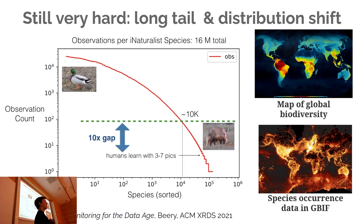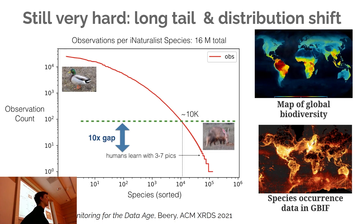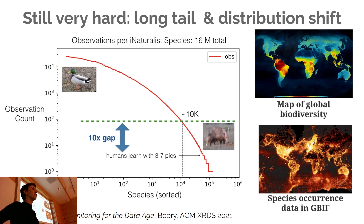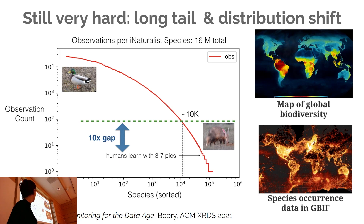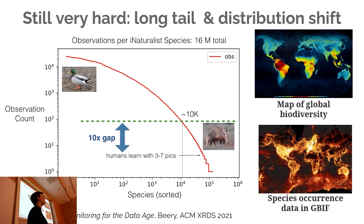Machine learning gives us scale — I definitely can't recognize 10,000 species, maybe only about 10. The other really big challenge is distribution shift. These models are basically maximizing likelihood over a distribution; if that distribution changes, performance degrades. The only constant in the world is change, so we need to build models that can adapt, that understand when they're starting to degrade. If we're using machine learning models to understand how the world is changing, but our model performance is also changing as the world changes, how do we disentangle real signal from model performance change? That's one of the biggest open questions we all need to work on.